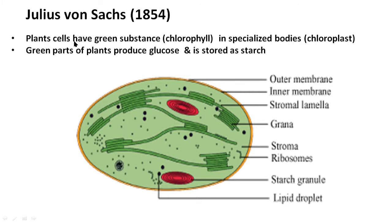Von Sachs further found that there is a green substance in plant cells stored in specialized bodies. We now call this green substance chlorophyll and these specialized bodies chloroplasts. So from his experiments we know that the chloroplast is the site of photosynthesis, it contains chlorophyll, glucose is produced during photosynthesis, and that glucose is stored as starch.